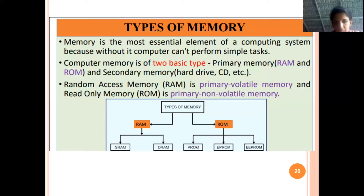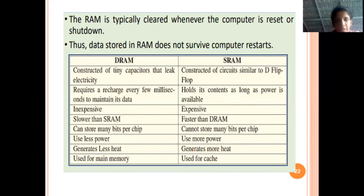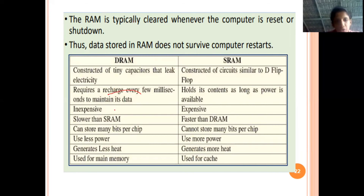Now let's classify ROM. The categories of ROM are: ROM (basic), PROM (programmable ROM), EPROM (erasable programmable ROM), and EEPROM (electrically erasable programmable ROM). For RAM, we have SRAM and DRAM — static RAM and dynamic RAM. SRAM retains its contents as long as power is available. DRAM requires recharging every few milliseconds in order to maintain the data, even if the power is present.